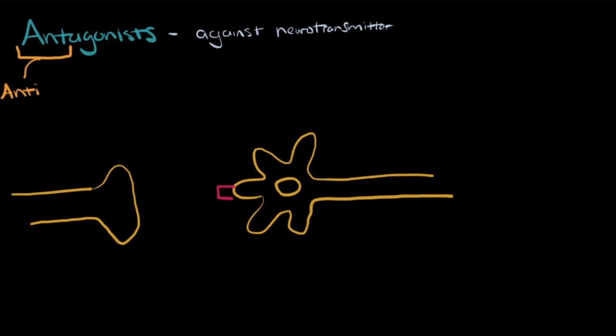An example of an antagonist is atropine, which is an antagonist of the neurotransmitter acetylcholine. Normally, acetylcholine will bind to its receptor, the acetylcholine receptor, and cause an excitatory signal. This is used in the body for movement, like getting our muscles to move.